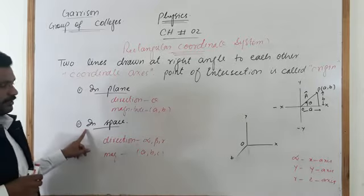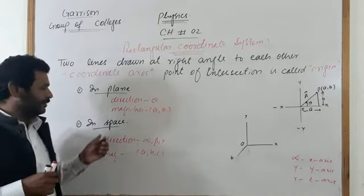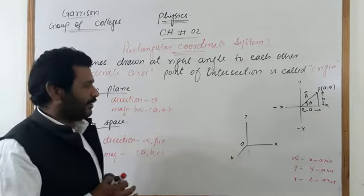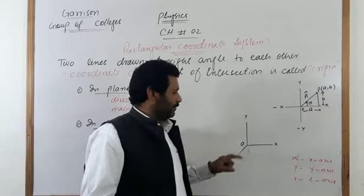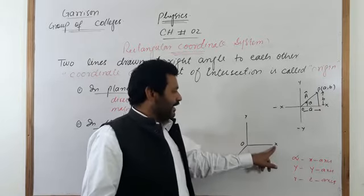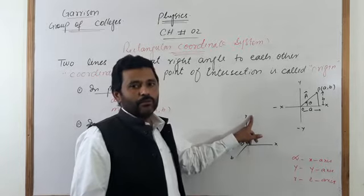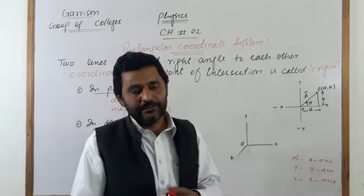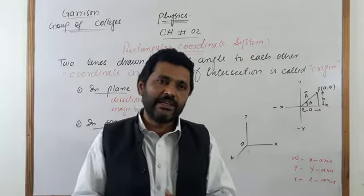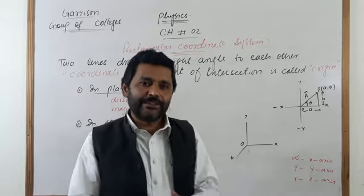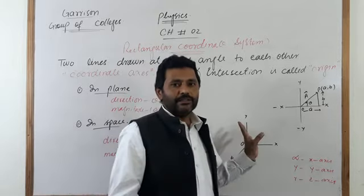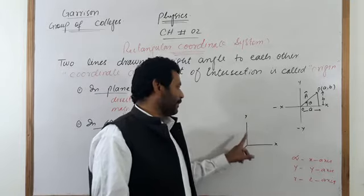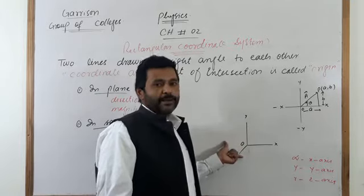For the description of a vector in space, we require another axis which is perpendicular to both the x-axis and y-axis, named as the z-axis. These three axes — x-axis, y-axis, and z-axis — are mutually perpendicular. The x-axis and y-axis have an angle of 90 degrees between them, and y and z are also perpendicular.